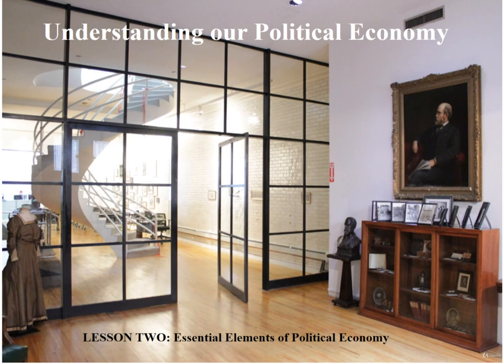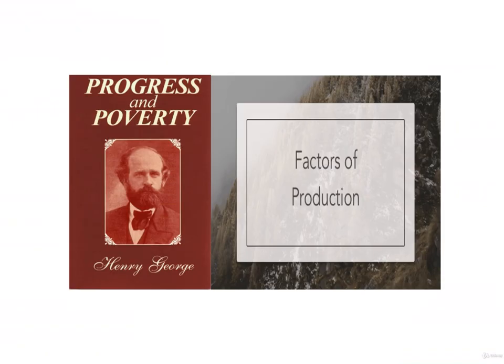In this, the second lesson of the Henry George School of Social Sciences course 'Understanding Our Political Economy,' we will introduce the essential elements of political economy, the essential terms utilized, and how these terms are defined in the study of how systems of political economy evolve and function. When Henry George was writing 'Progress and Poverty' during the 1870s, his reading of other political economists convinced him that a major problem with their analyses was the inconsistent use of terms. He committed to being as clear as possible and to adhere to definitions consistent with a fundamental understanding of the scientific principles involved. He started with clearly defining the three distinct factors of production.